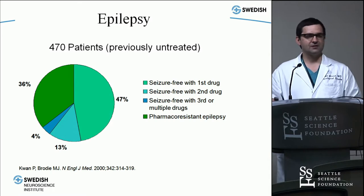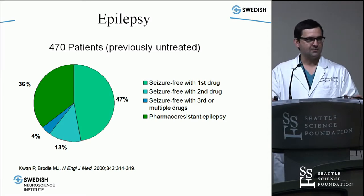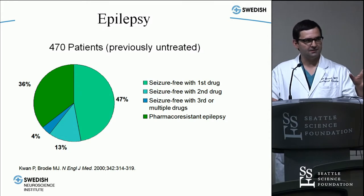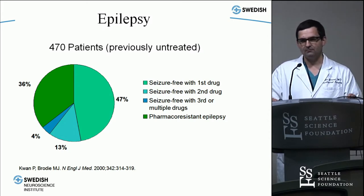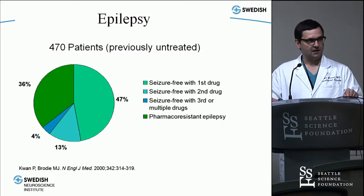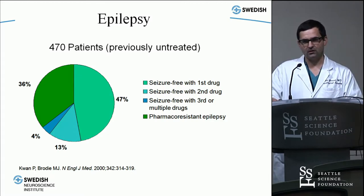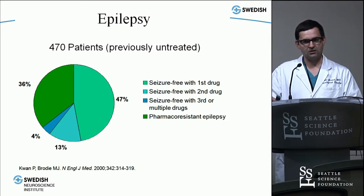Epilepsy — we should all know this paper by Kwon et al., talking about how patients respond to medications. Epilepsy is very common, and this paper puts into perspective how many patients are going to fail medical therapy. With one drug, about 47% of people will be controlled, but the percentage that respond drops precipitously as you add medications. After that third medication, the chance they'll respond is exceedingly low. About a third of people will be uncontrolled on medications.